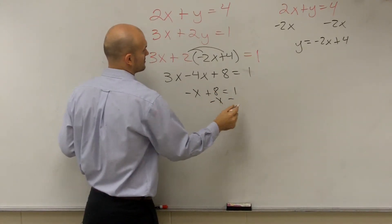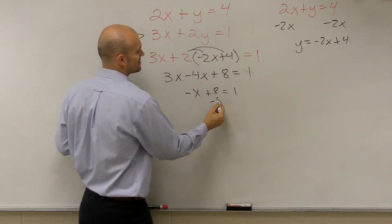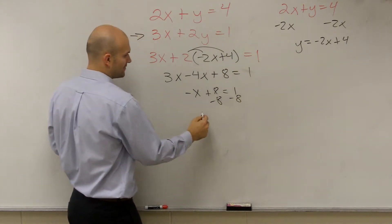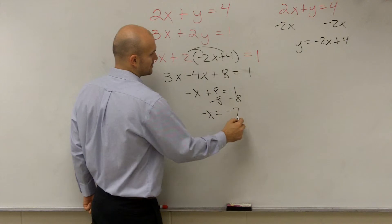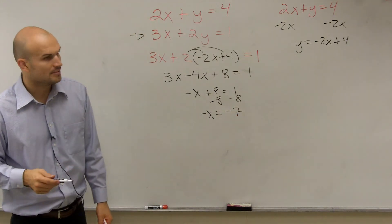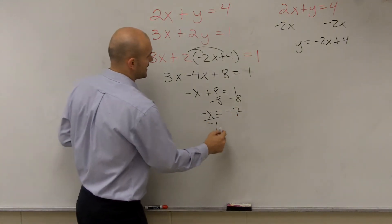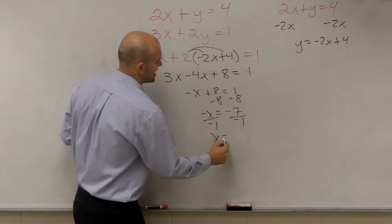Subtract 8. So I have negative x equals 1 minus 8, which is going to be negative 7. Divide by negative 1. x equals 7.